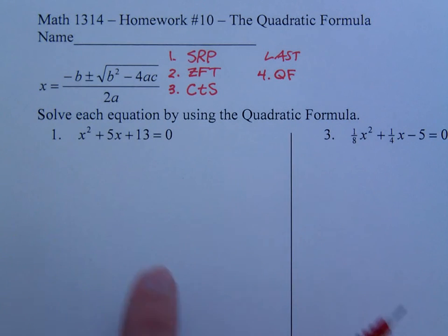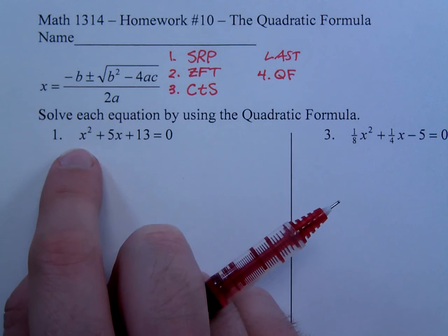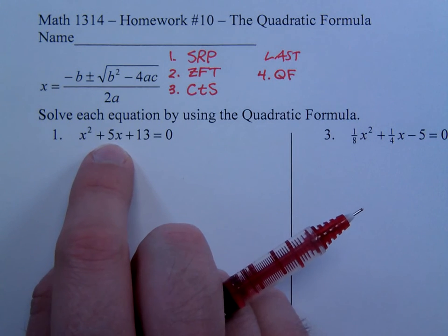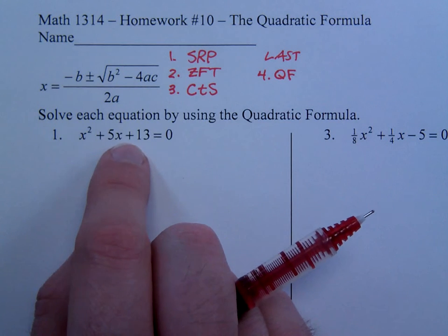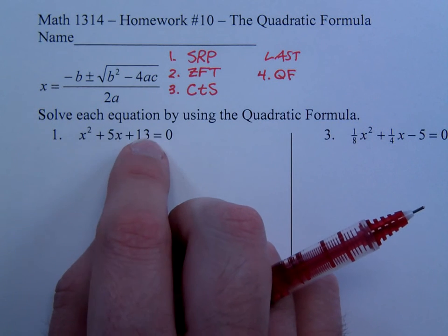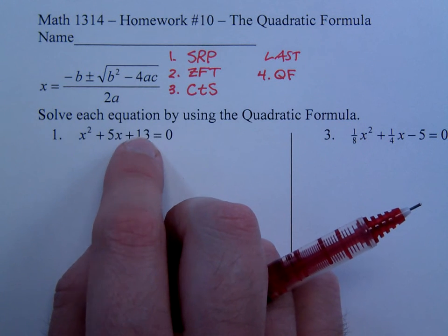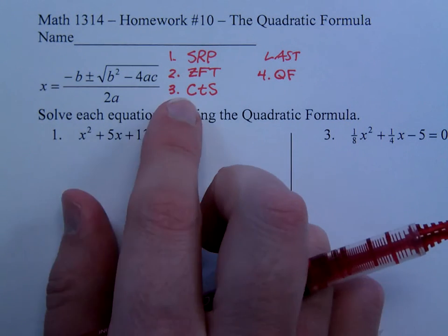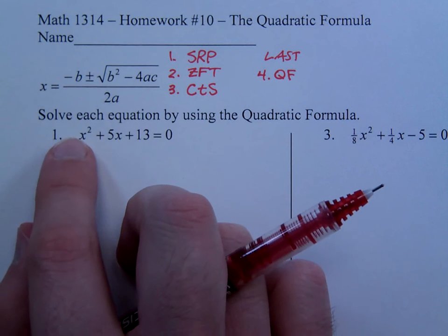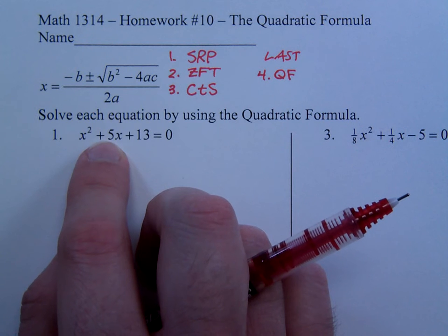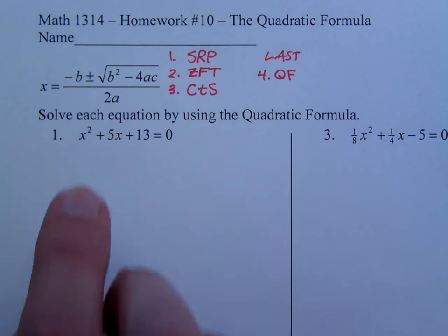So in number one, could I use the square root property? Well, I've got a square here, but this guy has the variable, and it's not a square, so it doesn't work out well for me. And number two, does it factor? No, there's nothing that you could multiply to get 13 and add to get 5. Completing the square, well, this is a 1, but this guy here is not even, and so that's going to create fractions, and I know we typically don't want to do that.